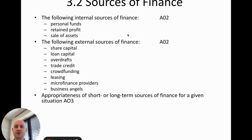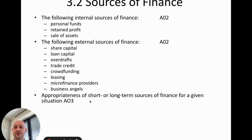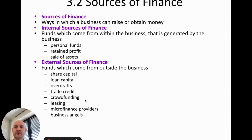These are the learning objectives for this chapter. We're going to learn three internal sources of finance and eight external sources of finance. In the second video, we'll look at the pros and cons of the different sources of finance and which one is the best for a chosen business in a certain context.